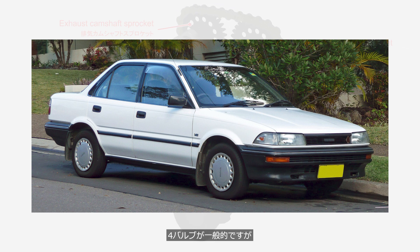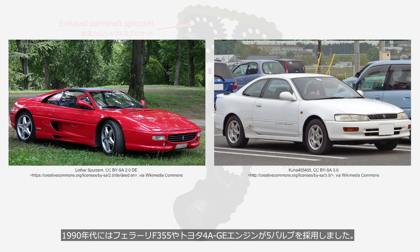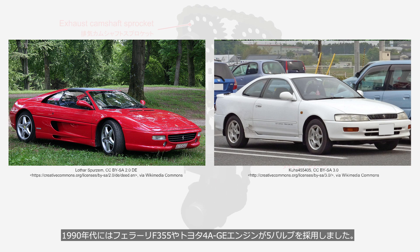A typical DOHC engine has four valves, but in the 1990s, the Ferrari F355 and Toyota 4AGE engines adopted a five-valve configuration.